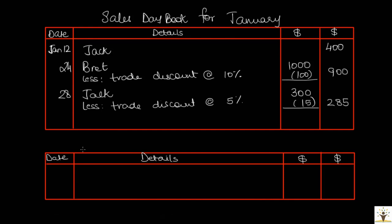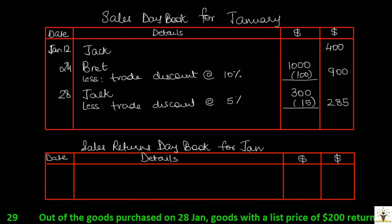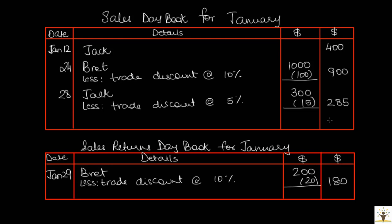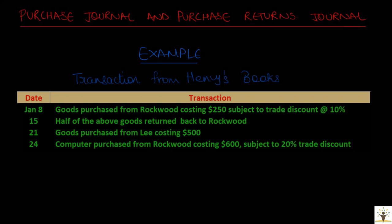On Jan 29, goods with a list price of $200 were returned by Brett — this is a sales returns transaction. In the sales returns day book, date Jan 29, details Brett. When goods were sold, a trade discount of 10% was applicable, and the same rate applies on the return. List price $200 in the working column, less trade discount at 10% = $20, and the final value of sales returns is $180. Once the books are prepared, totals are taken at month end: total sales for January = $1,585, and total sales returns = $180.